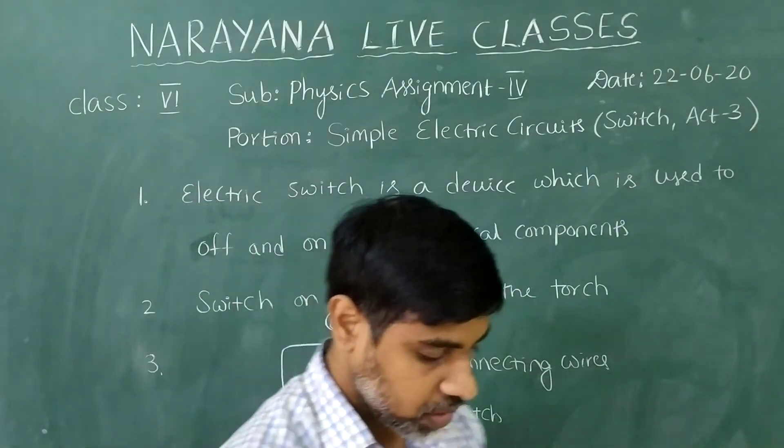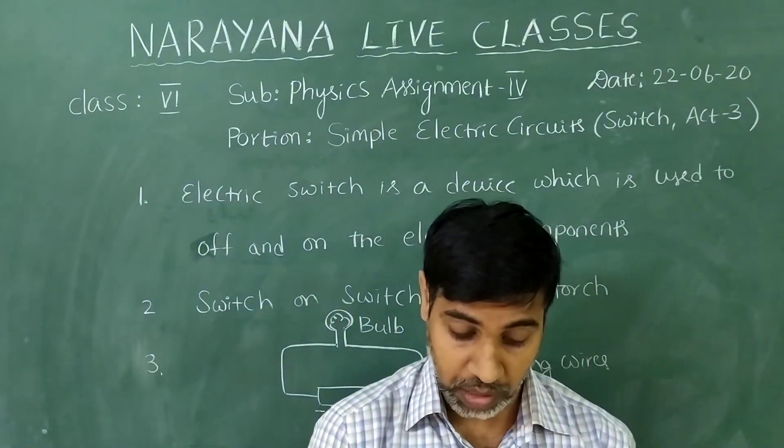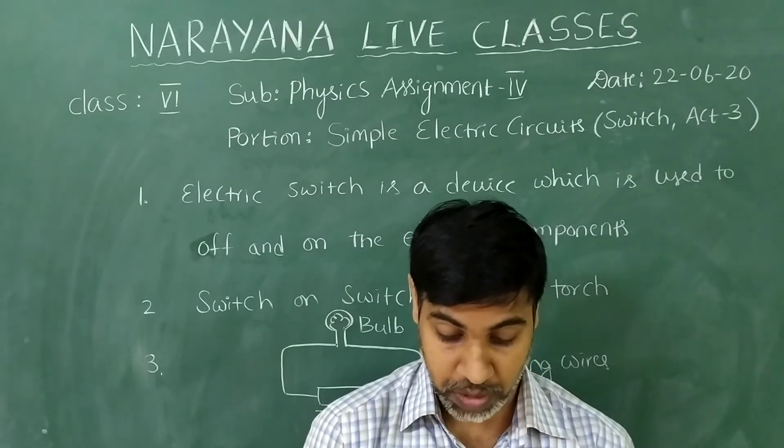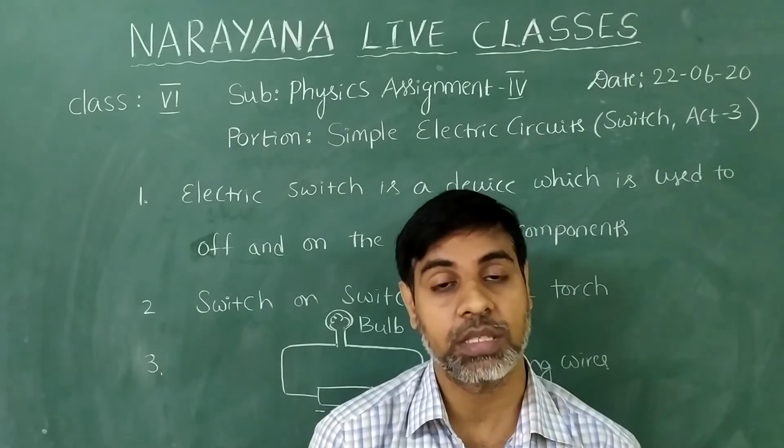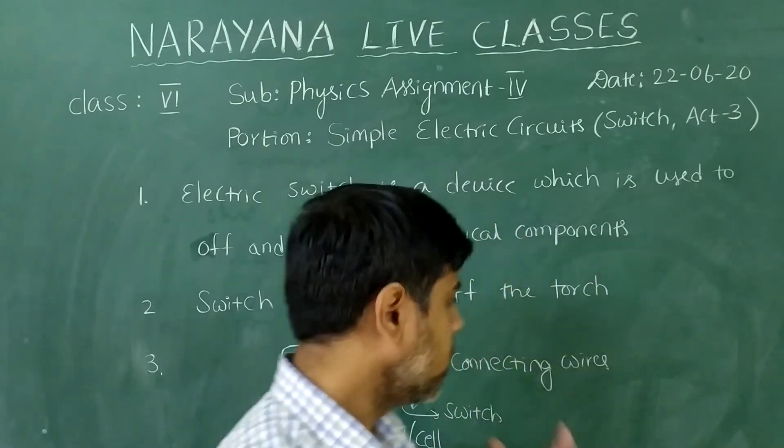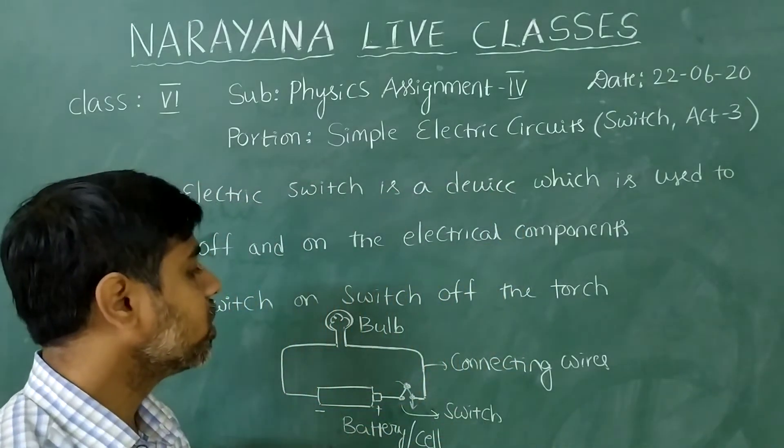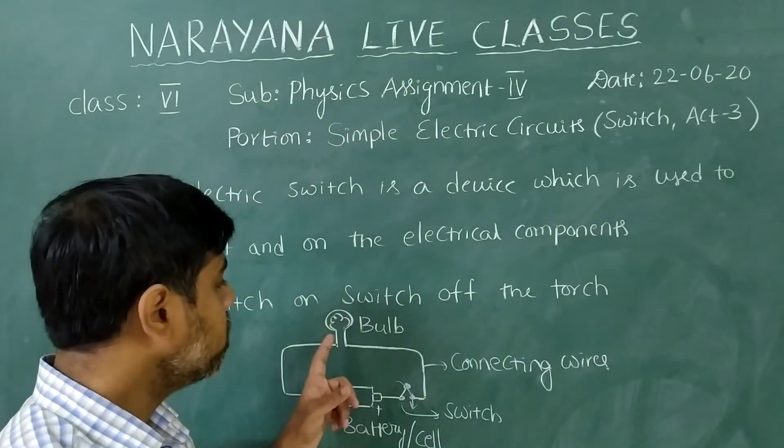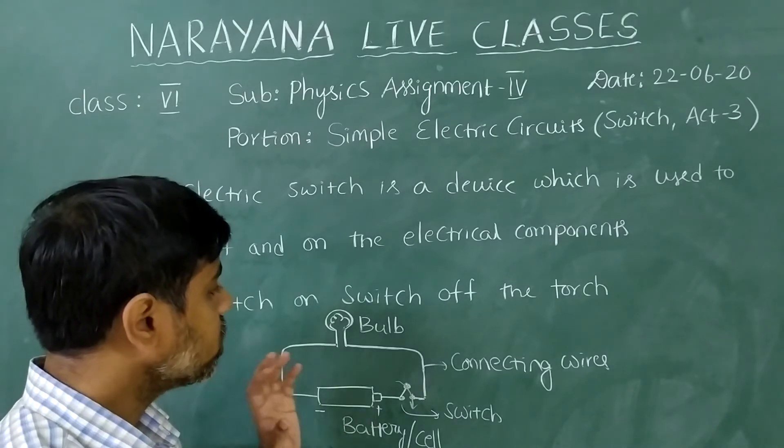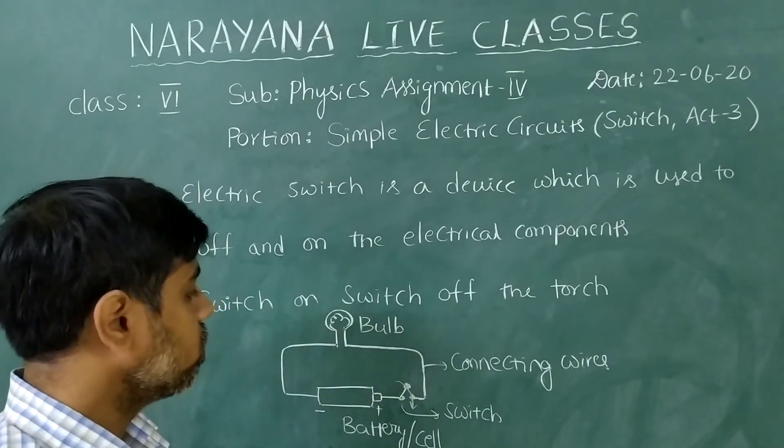And the fourth question is, a circuit is connected with a cell, bulb, and a switch, but the bulb is not glowing. Write all possible reasons for this. See, the same circuit, the bulb is not glowing. What are the situations when the bulb is not glowing?